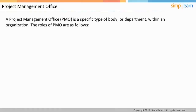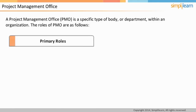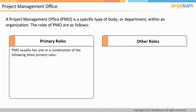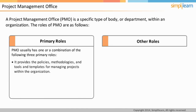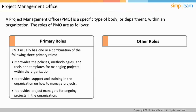Project Management Office or PMO is a specific type of body or department within an organization. PMO performs several roles in the organization, which can broadly be classified as primary roles and other roles. Typically, the PMO may take up any one or a combination of three primary roles: it provides the policies, methodologies, and tools and templates for managing projects; it provides support and training on how to manage projects; and it provides project managers for different ongoing projects in the organization.